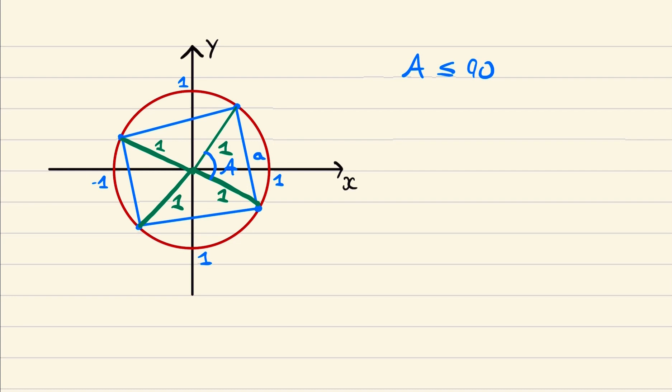And so by the cosine rule we know a squared will be one squared plus one squared minus two lots of one times one times cos A which we can rewrite as two minus two cos A.